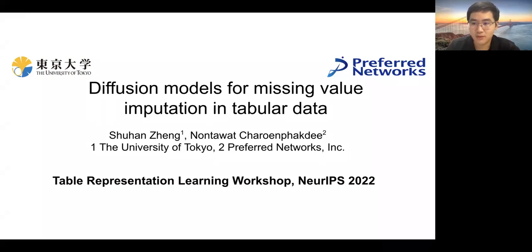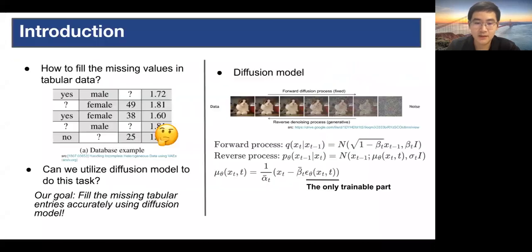I would like to introduce our work: Diffusion Models for Missing Value Imputation in Tabular Data. In robot datasets, you can imagine that we may encounter a large number of missing entries. So how do we fill these missing entries?